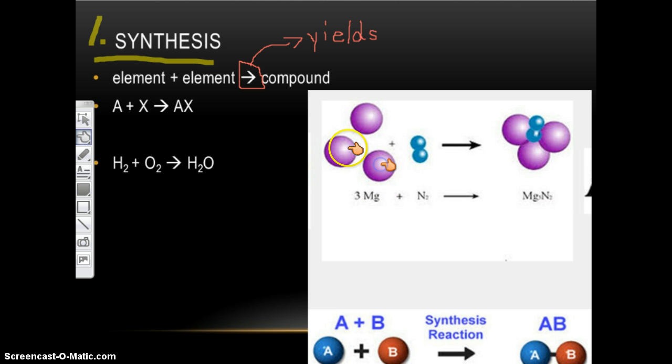And here's another example. This time I have three magnesiums. Does it matter that there's three of them? No, it doesn't matter because it's one element. Plus N2. Well, here I have two Ns bonded together. That's still okay because that's just our second element. And then they go together to make magnesium nitride, or Mg3N2.